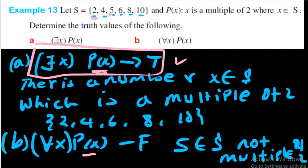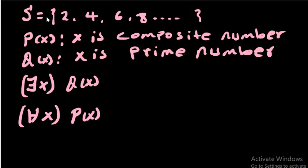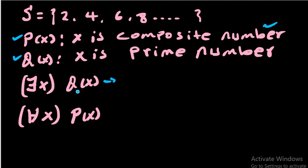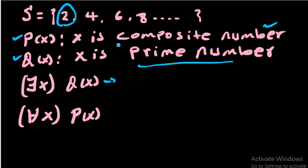Because of the number 5, the universal statement fails. Let us try another example. Here our domain is the set S of even numbers. There are two propositions: P(x) says 'x is a composite number' — composite numbers have more than two factors — and Q(x) says 'x is a prime number.' Then: there exists x, Q(x) — is there a prime number from this domain?